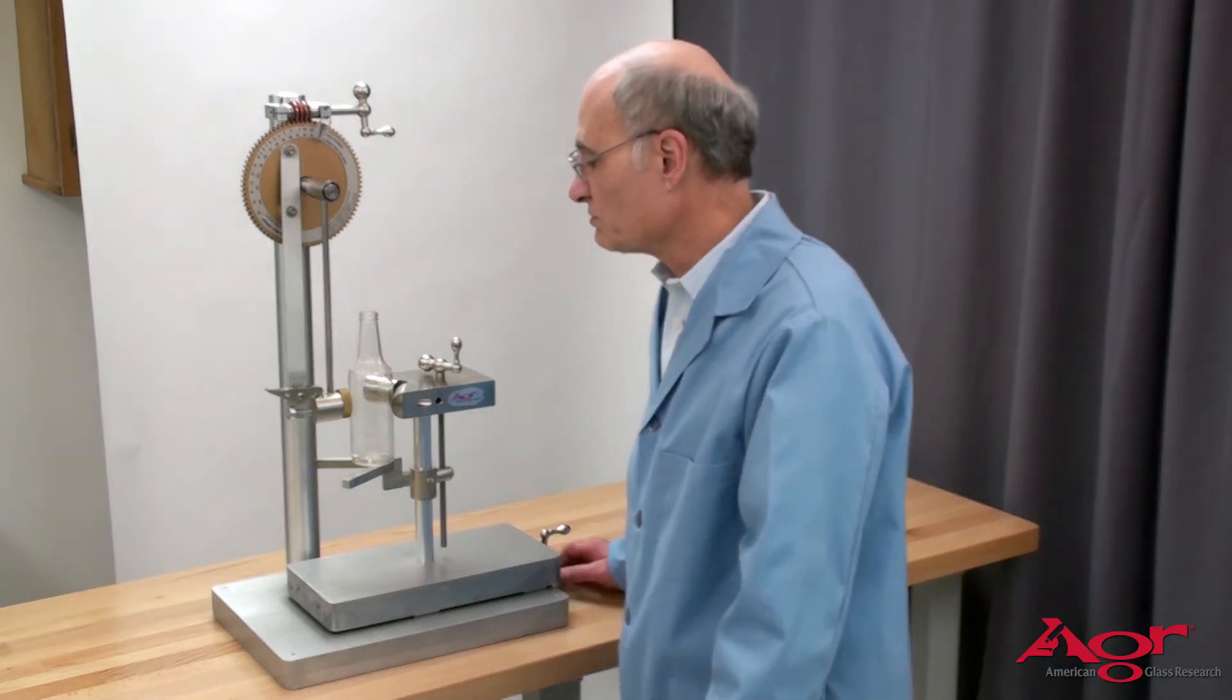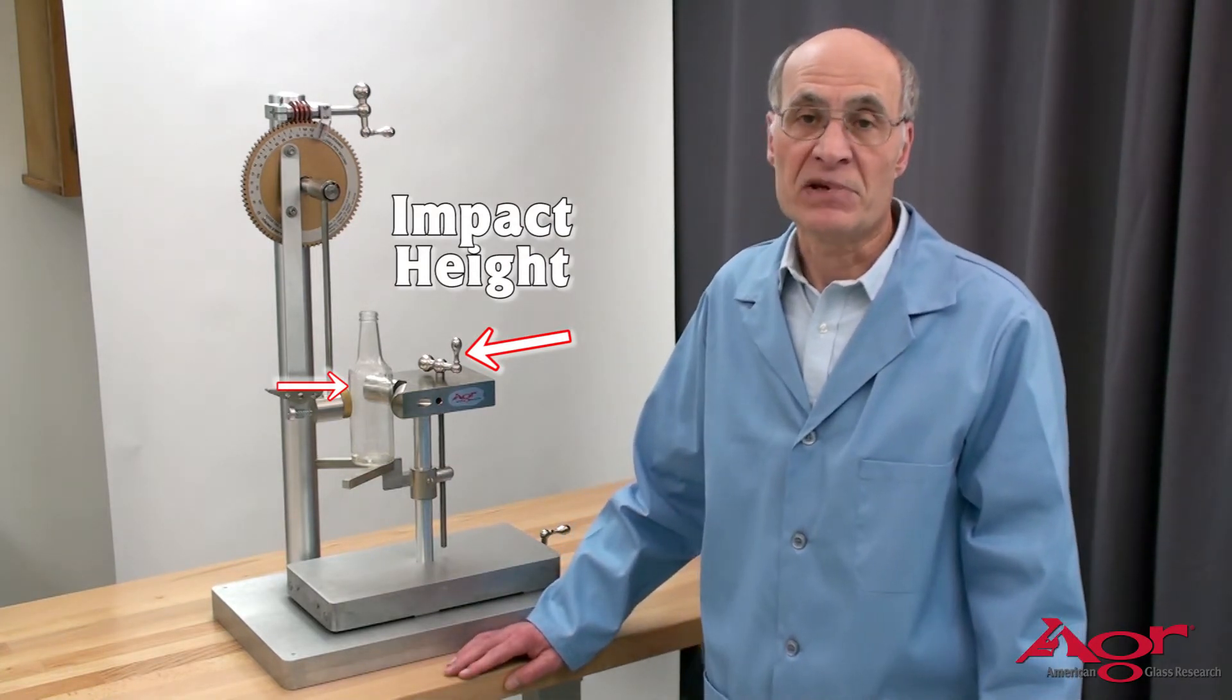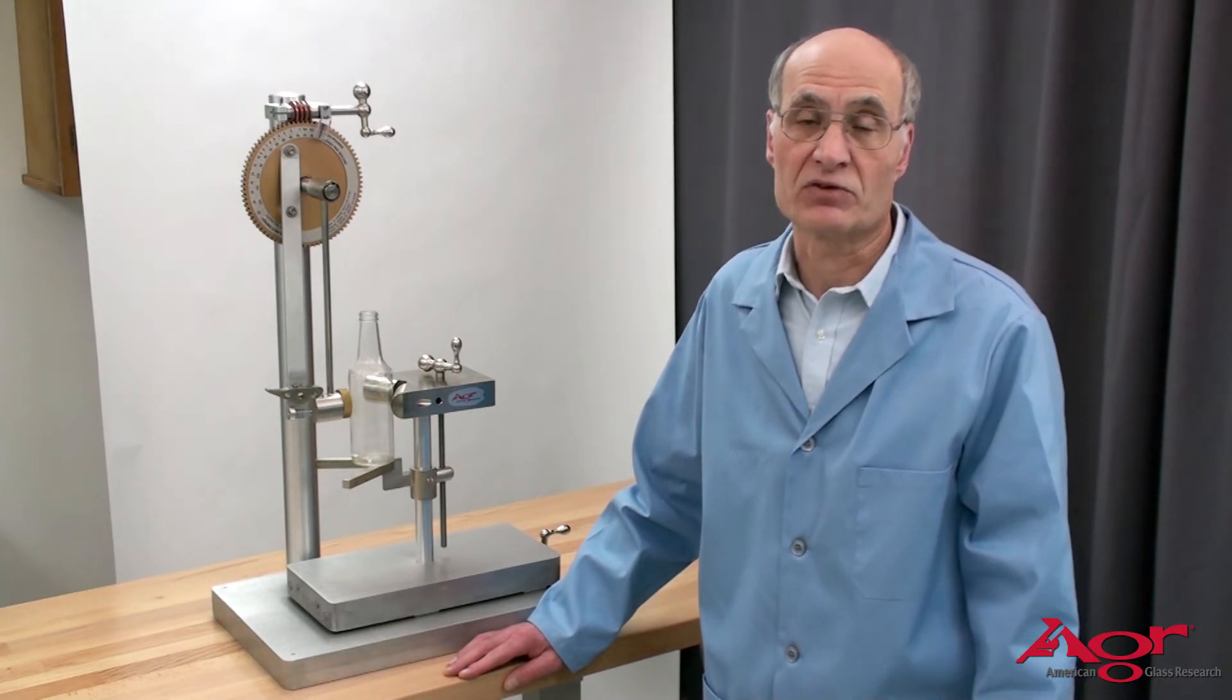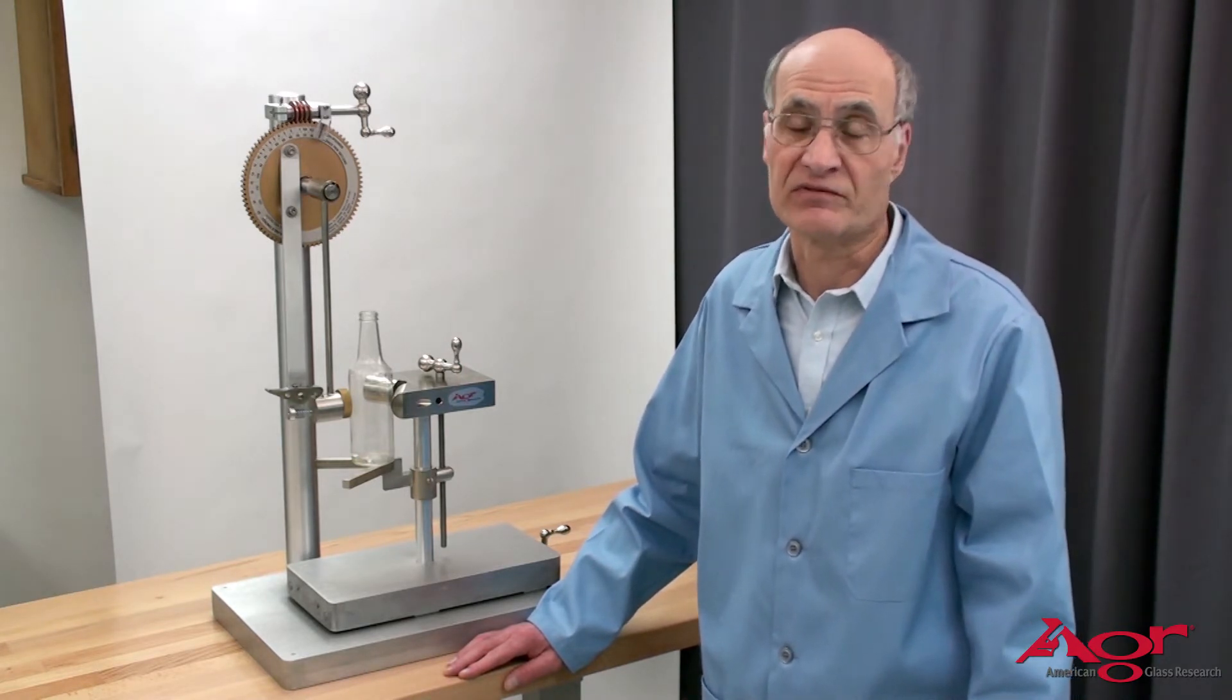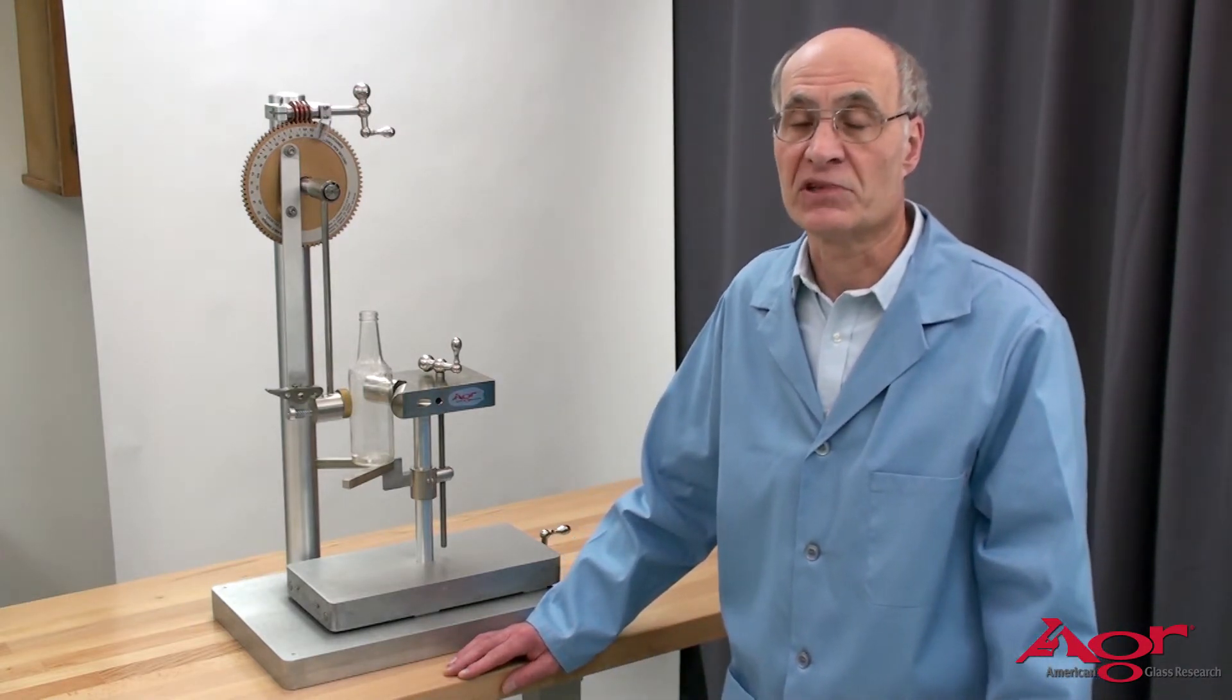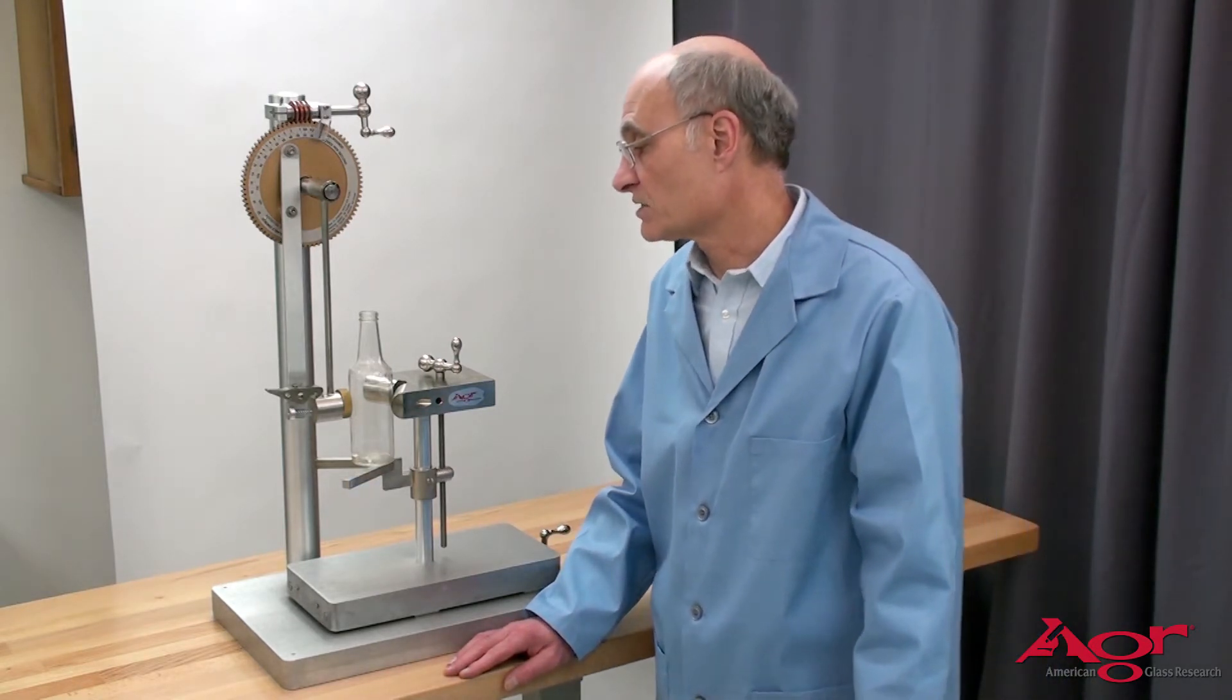The final adjustment we really want to make is for the impact height on the bottles. Impact is fairly localized so if you impact at the shoulder it doesn't have any effect on the heel and if you impact at the heel it has no effect on the shoulder. In this case we're doing an upper sidewall impact to the bottle but you can pick the impact site depending on the location you want to test.